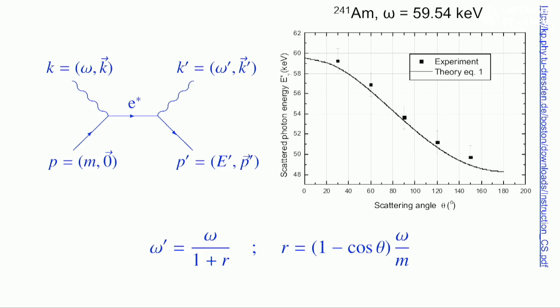The conservation of energy momentum reduces the energy omega prime of the outgoing photon compared to that of the incident one omega if the reaction occurs on an electron at rest. The reduction depends on the scattering angle theta and the photon energy itself. The figure gives an example of this relationship for a source of americium 241 which emits photons with omega equal to 59.54 keV.